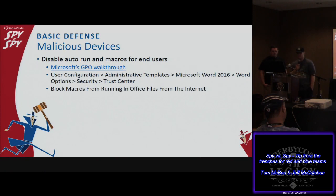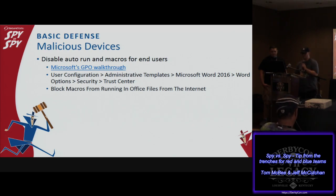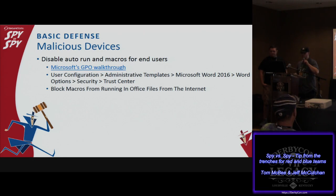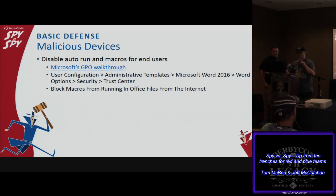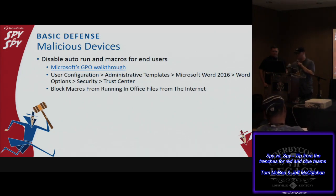For basic defenses, this one is pretty stock standard — it's been around for a while: disabling things like auto-run and macros for end users. Microsoft has some great group policy walkthroughs on how to do this, especially with Office 2016. The link in the slide speaks to blocking macros from anything coming in from the Internet to the user's inbox. Basically using group policy objects to denote who and what macros are allowed to execute based on where they're coming from.